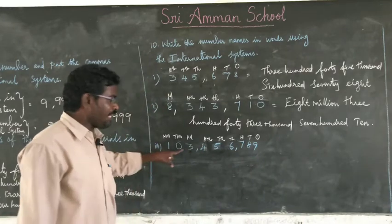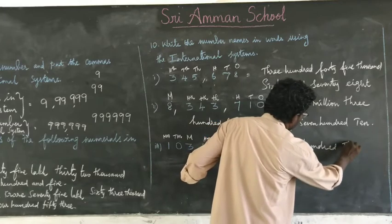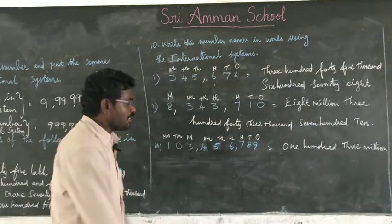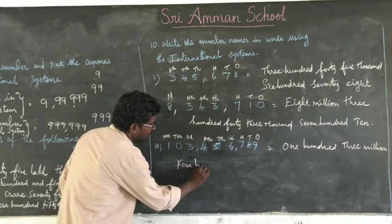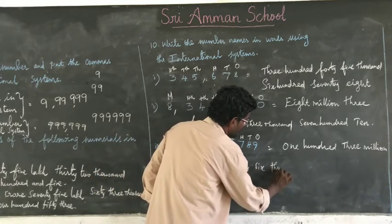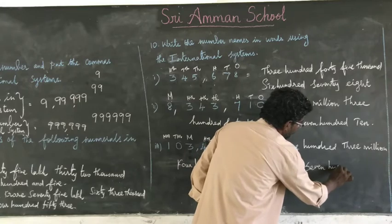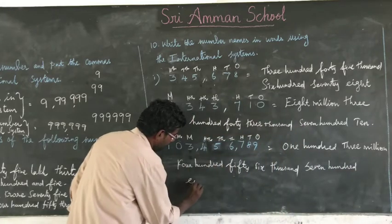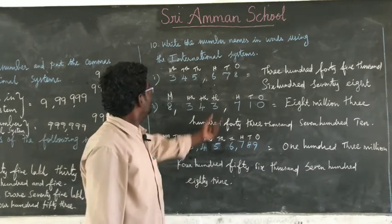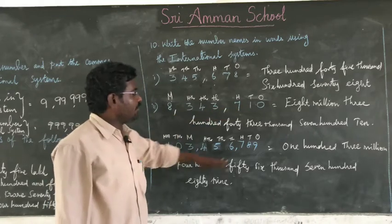Next question: write the place value chart — ones, tens, hundreds, thousands, ten thousands, hundred thousands, millions. How many millions are there? Eight million. Next thousands — three hundred and forty-three thousand. How many? Three hundred forty-three thousand, seven hundred and ten. Three groups are formed: units, thousands, and millions.